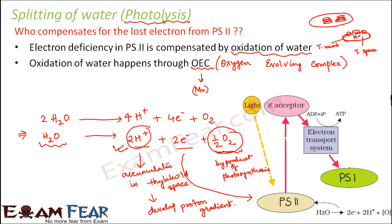Also, when electrons pass through the electron transport chain, protons are transported from the stroma into the thylakoid space, using the energy released during electron transport. This causes the proton concentration inside the thylakoid to increase while the proton concentration in the stroma decreases, creating a proton gradient. We will discuss how this proton gradient is helpful in subsequent steps.